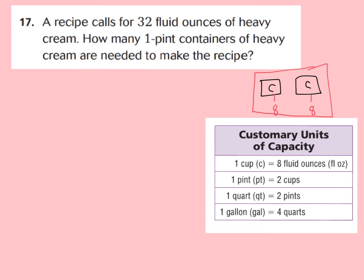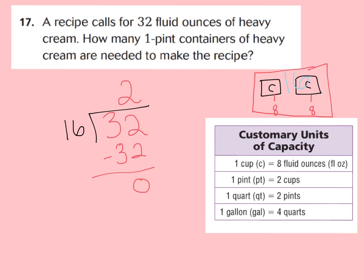Now we can answer the question. A recipe calls for 32 fluid ounces, and 16 ounces equals 1 pint. So how many 1-pint containers are needed? If you said 2, you are correct, because 2 times 16 is 32. You would need 2 one-pint containers.